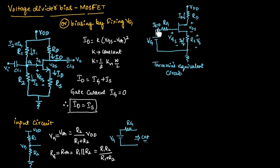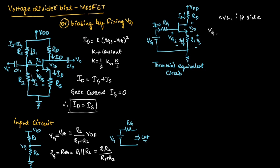Here, Ig is assumed to be 0, so we will keep the output side as it is — it will not be changed. Now, let us apply KVL to the input side. Applying KVL, we get: Vg minus Ig·Rg minus Vgs minus Id·Rs equals 0.